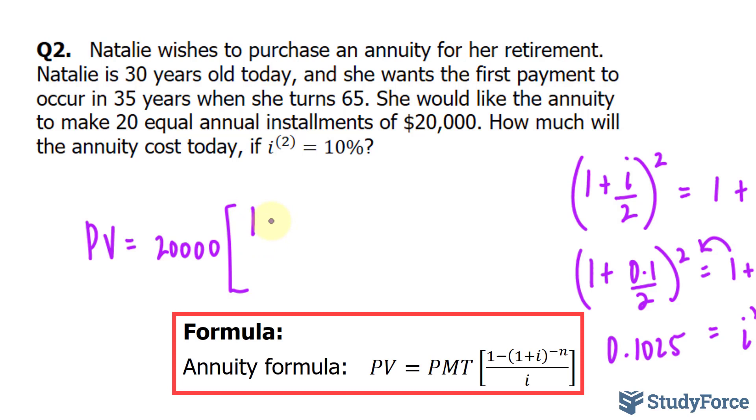in parentheses, 1 plus the interest we just found, and that gets raised to the power of negative 20, which is the amount of periods that she'll be receiving this, over the interest rate.